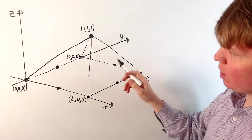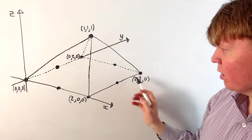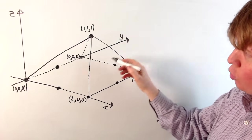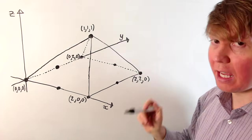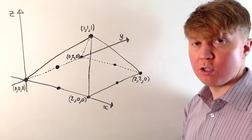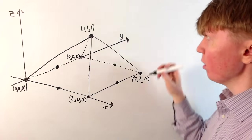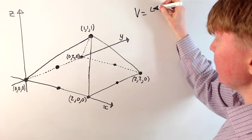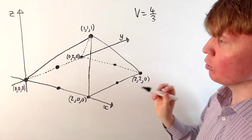Here we'd have a third times the area of the base, which is just 2 times 2, so a third times 4, and then the height is the z-coordinate here, which is just 1, so we multiply by 1. So we know that the volume is going to be 4 thirds — this is what we're aiming for.